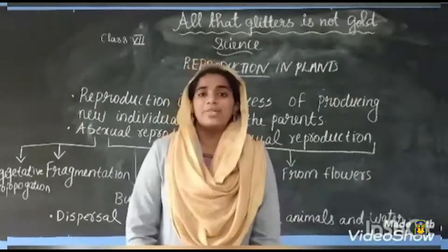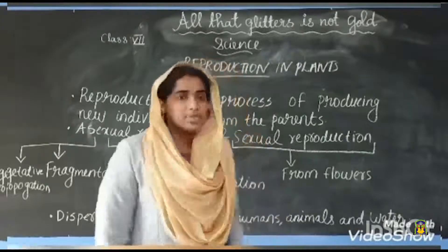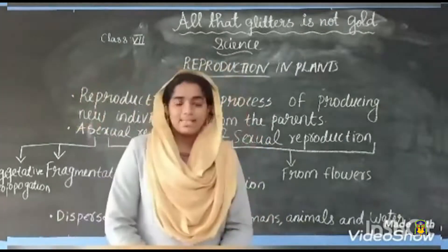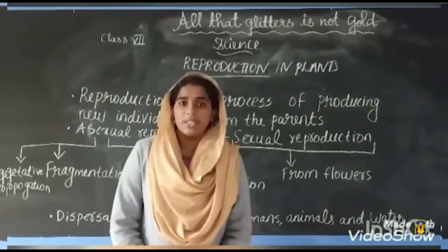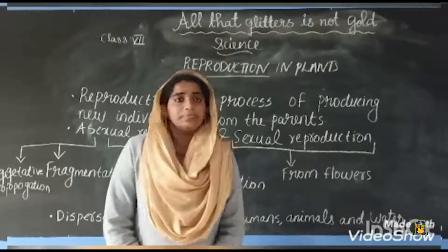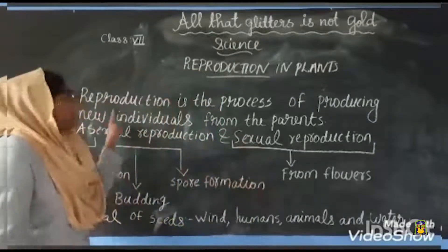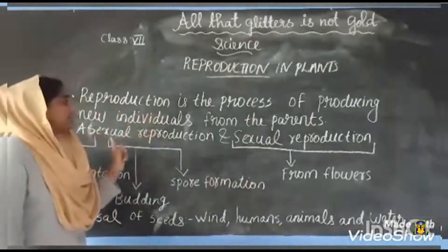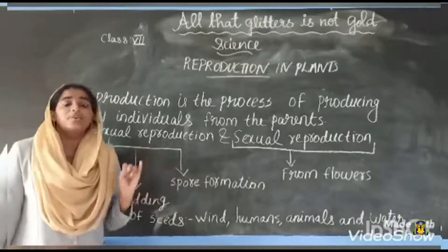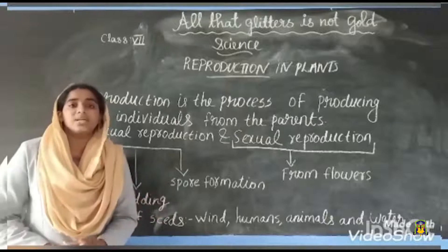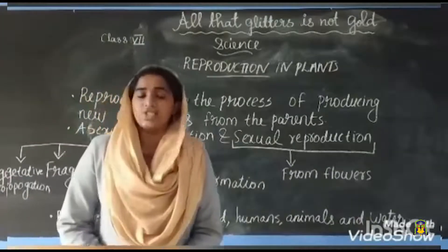Hi children, welcome back to our science class. We have completed the chapter reproduction in plants. Today I would like to give the summary of this chapter. In this chapter we discussed reproduction, different types of reproduction, colonization, fertilization, and dispersal of seeds. These are the main points we discussed in this chapter.